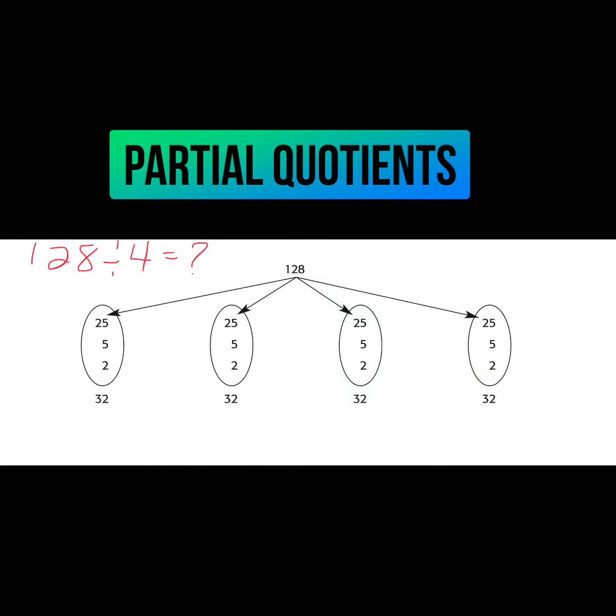A partial quotient is a partial answer to a division question. It is a step-by-step method of division wherein at each step a partial answer is obtained.